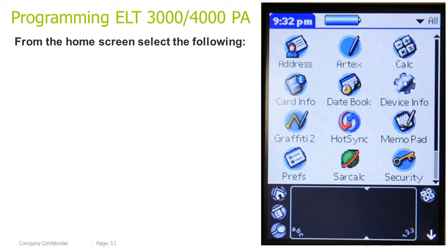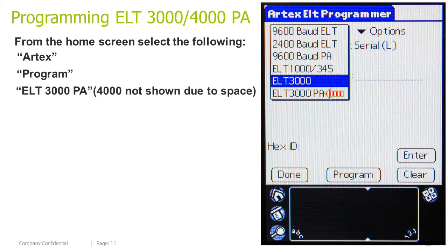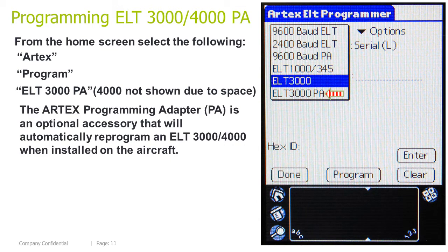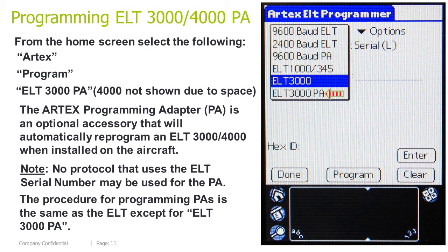Programming the ELT 3000/4000 programming adapter: from the home screen, select ARTEX > Program > ELT 3000 PA (the 4000 is not shown due to space). The ARTEX programming adapter PA is an optional accessory that will automatically reprogram an ELT 3000/4000 when installed on the aircraft. Note: no protocol that uses the ELT serial number may be used for the programming adapter. The procedure for programming PAs is the same as an ELT, except the option will say ELT 3000 programming adapter.